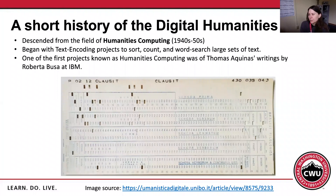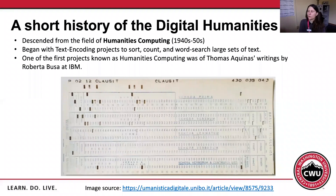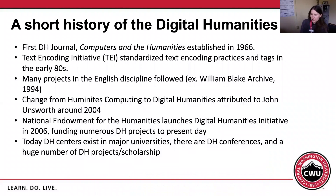This is an example of one of the punch cards from the Aquinas project, back when computers were filling up entire rooms and the way you communicated with a computer was via punch cards. The first digital humanities journal, Computers and the Humanities, was established in 1966. Shortly after, in the early 1980s, the text encoding initiatives standardized text encoding practices and tags, which made it much easier for people to participate in these kinds of projects.